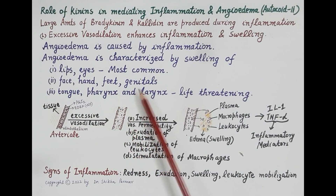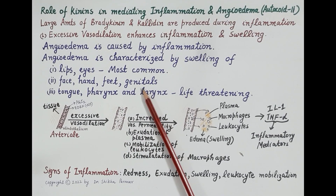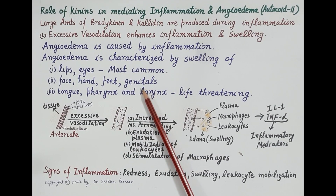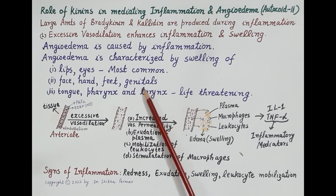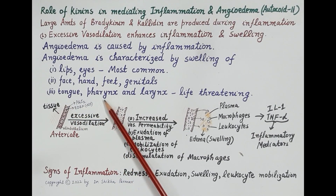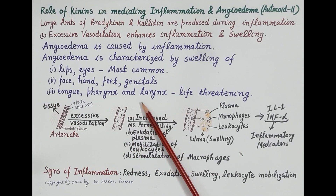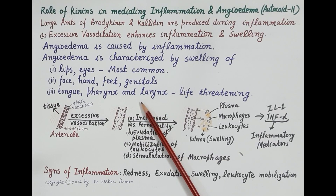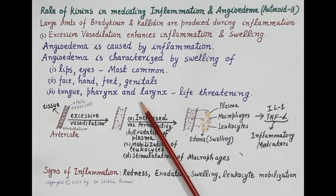Many people also experience red rashes on the skin. If the inflammation causes swelling of the tongue, pharynx, or larynx, the person is unable to breathe and angioedema becomes life-threatening. An episode of angioedema commonly lasts about 1–3 days and usually gets better on its own.